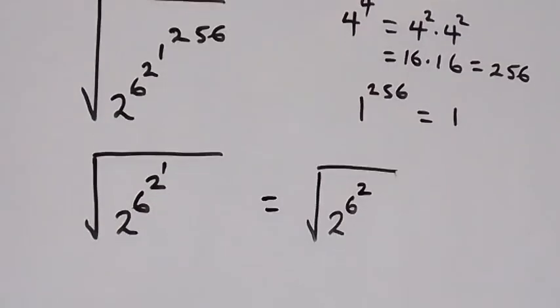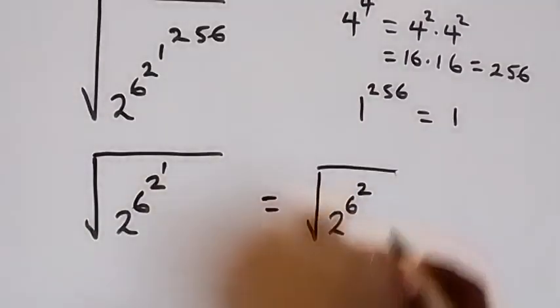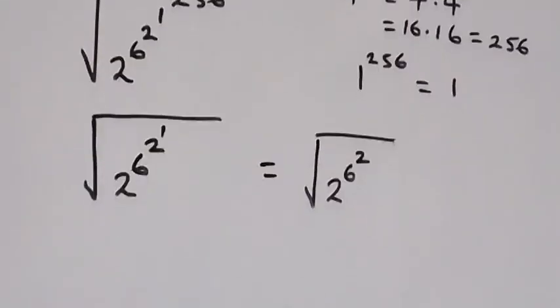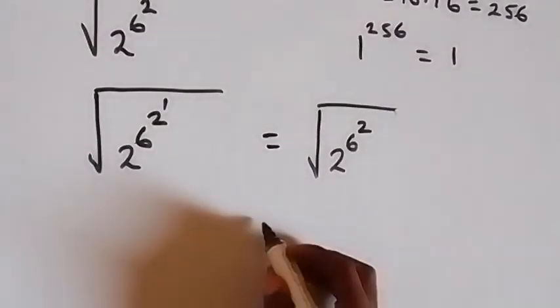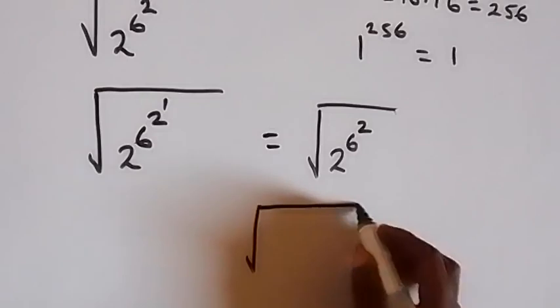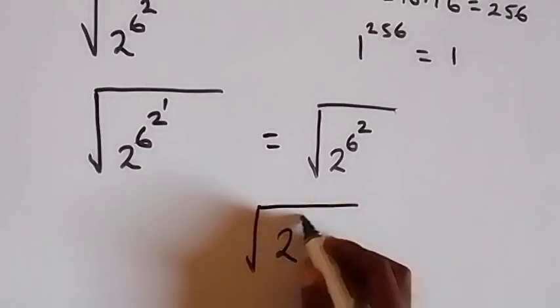Then 2 raised to power 6 here, simply 6 times 6, which is 36. And from here, we have square root of 2 raised to power 36.